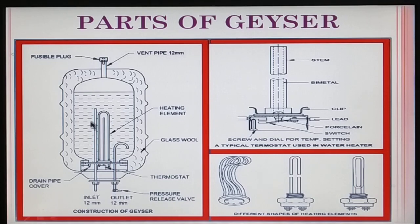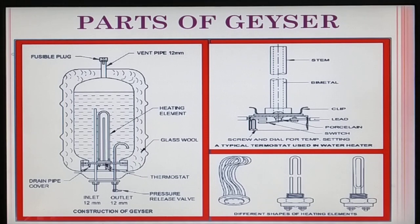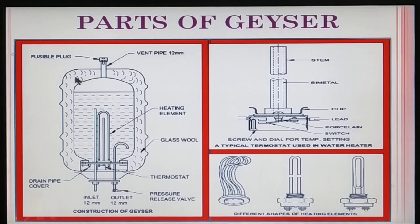The inner tank has a thermostat. The coil is in a U-shape, fitted with inlet and outlet pipes. There is a dry-in pipe. The outer body has a glass wool layer used to avoid heat loss and provide heat insulation.